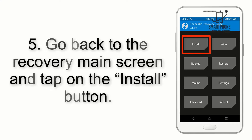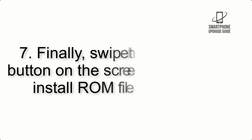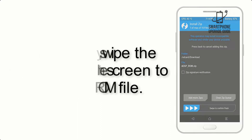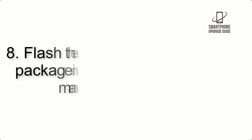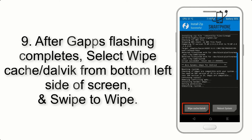Step 4: Swipe the button to wipe the device. Step 5: Go back to the recovery main screen and tap on the Install button. Step 6: Navigate to the storage and select the ROM zip file. Step 7: Swipe the button on the screen to install the ROM file. Step 8: Flash the GApps zip package in the same manner.